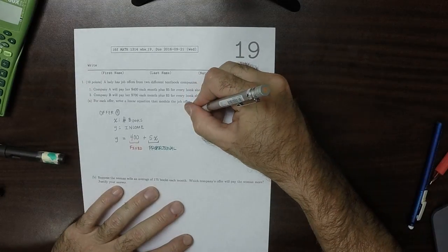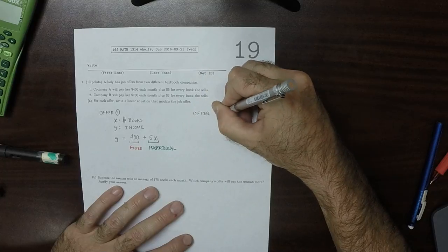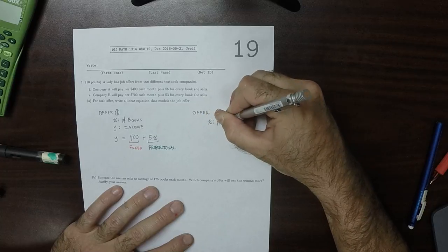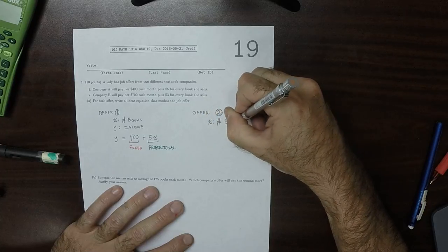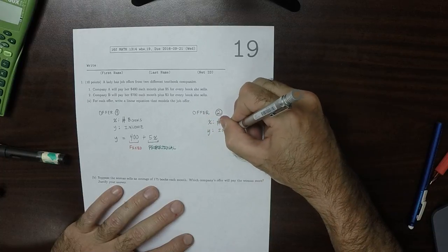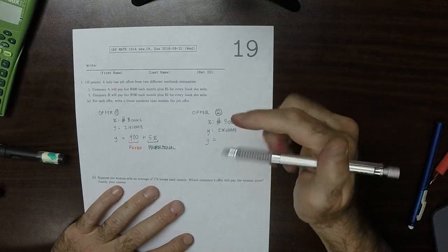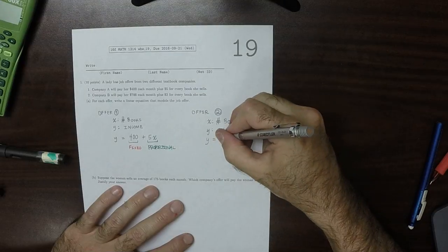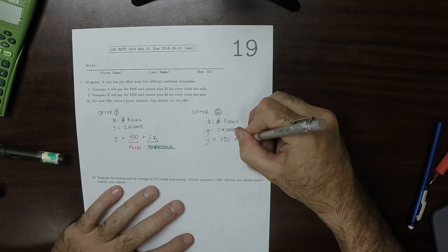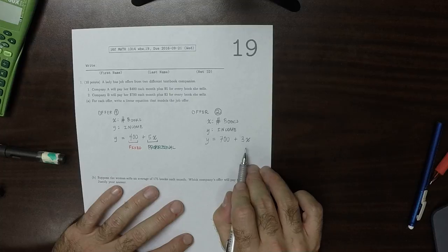Offer 2, again letting x denote the number of books and y income. The equation is y equals 700 a month, so that's a bigger fixed income, and then plus 3x. So it's a bigger fixed income but a smaller proportional income.